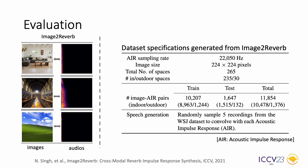For model training and evaluation, we exploit the publicly available Image to Reverb dataset. It provides paired acoustic impulse responses and images in diverse spaces. The dataset covers in total 265 spaces, with 235 indoor and 30 outdoor. We further split them into non-overlapping train and test partitions. To augment reverberant speeches, we randomly select five anechoic speech samples from the WSJ dataset to convolve with each acoustic impulse response.